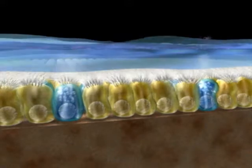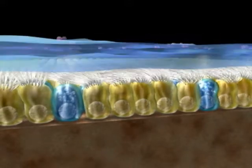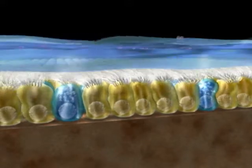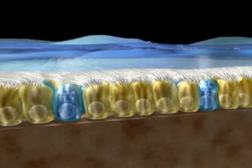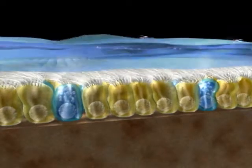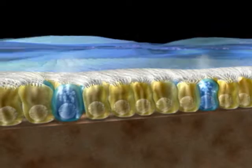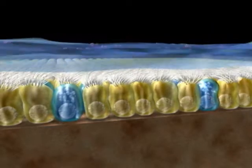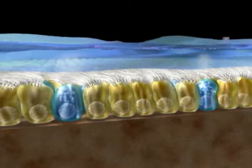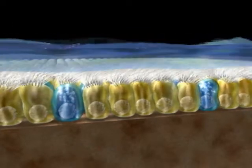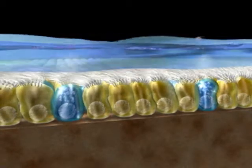During the effective stroke of the ciliary beat, the cilium is straight and the tip engages the gel layer of the mucous blanket, whereas during the recovery stroke, the cilium is bent over and lies in the sol layer. The mucous blanket is propelled backwards by the metachronal movement of the cilia.